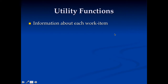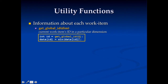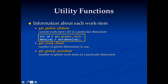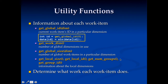OpenCL also has a bunch of utility functions that give you information about each work item. We saw one already: get_global_id — this tells us the work item ID in a particular dimension, for example get_global_id(0) gives the ID in the first dimension. There are others: get the work dimensions, get the global size, get local information, number of groups, group IDs, and so on. This information is used so you can write code that figures out what each work item does, allowing more flexible kernels that are clever about determining which work they should perform.